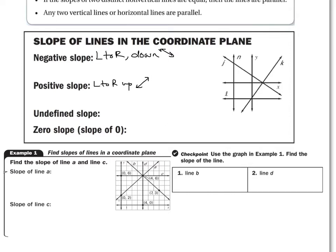Undefined slope is undefined because you can't divide by zero. Think of it this way: you can't walk up a wall. A wall is straight up and down — in other words, a vertical line has undefined slope. Zero slope is when you take zero divided by a number. This is a horizontal line with zero slope. Think of this as walking on the floor — you're not going up, you're not going down, you're walking on the same plane all the way through.